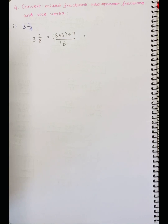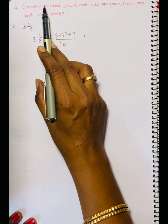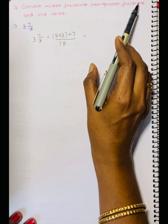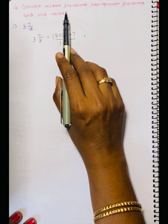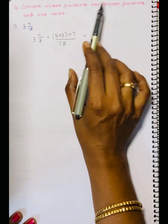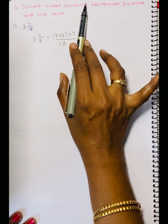Welcome to Math Talk. Today we are going to learn Unit 1 Fractions, Fourth Sum: Convert Mixed Fractions into Improper Fractions and Vice Versa. Vice versa means Improper Fractions into Mixed Fractions.